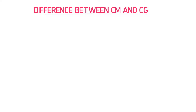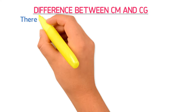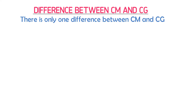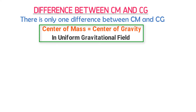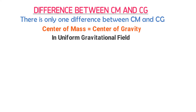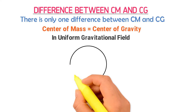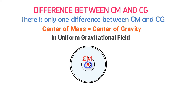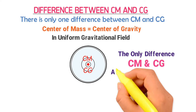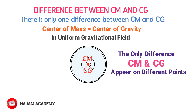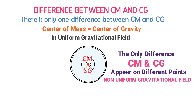What is the difference between center of mass and center of gravity? There is only one difference. In most cases — specifically in a uniform gravitational field, meaning near the earth's surface — the center of gravity for any object is the same as its center of mass. For example, the center of mass of a circular disk is at this point, and the center of gravity is also at this point.